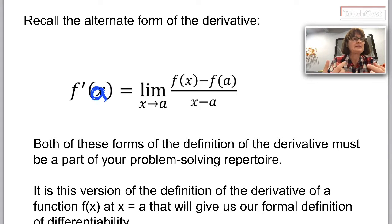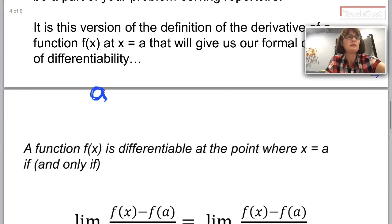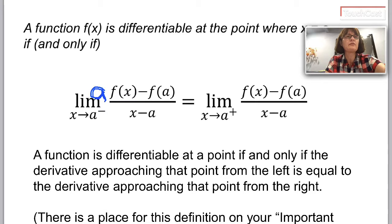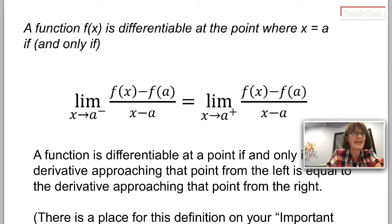This form builds the basis of our formal definition of differentiability. Informally, a function is differentiable where it's smooth and continuous. Another way to think about it is where the slope from the left is the same as the slope from the right. So we're going to state that formally by using this. A function f of x is differentiable at a point a if the limit as x approaches a from the left of f of x minus f of a over x minus a is equal to the limit as x approaches a from the right of f of x minus f of a over x minus a. And that's essentially using the alternate form of the derivative. I'm saying the derivative from the left is equal to the derivative from the right. There's a place for that on your 19 facts paper and you should write it in and make sure you have all the pieces, especially the limit expression.